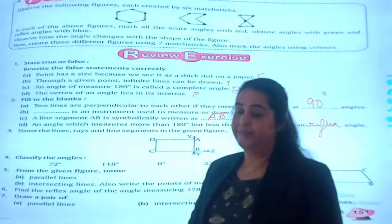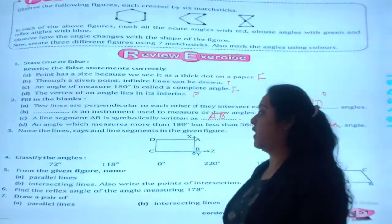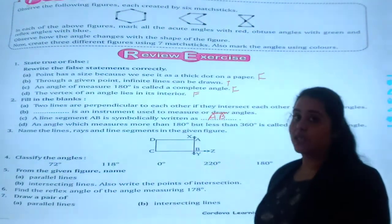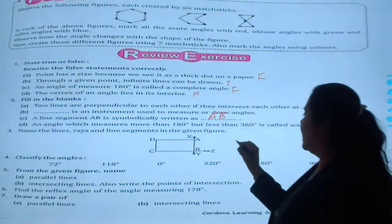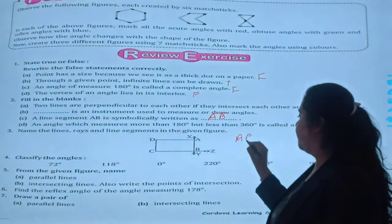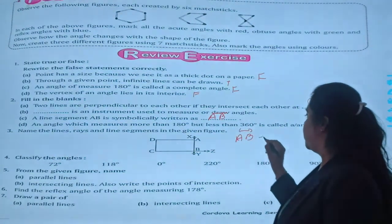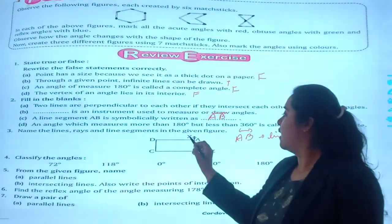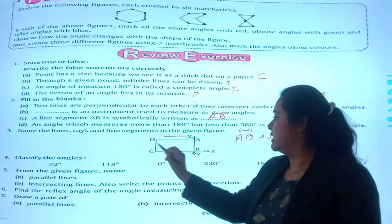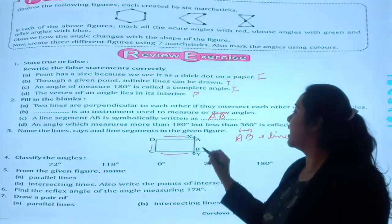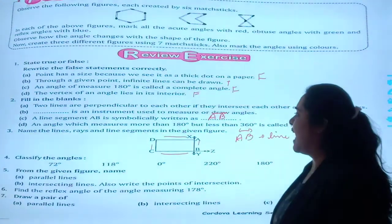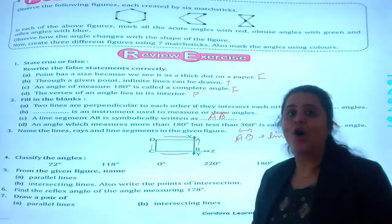Question number 3, name the lines and line segments in the given figure. Line will be AB, this will be my line. Line segments will be AD, BC, BA or AB. This is very easy, right? And the range will be your homework.